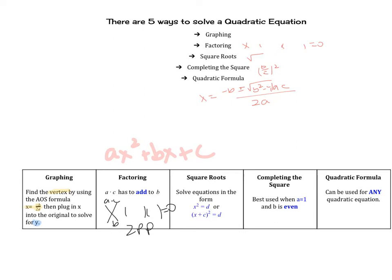For square roots, equations must be in the form x² = d, or (x + c)² = d, so you can take the square root of both sides. Completing the square works best when a equals 1 and b is even — you could use it any time, but for now focus on those conditions. The quadratic formula works for any quadratic equation; you don't have to think about when to use it, but it is a lot of work. The goal is to choose the most efficient method.